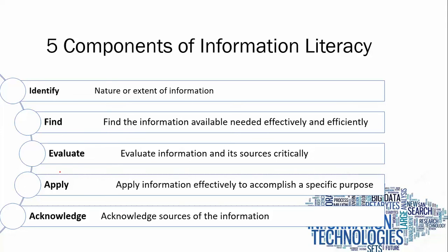After evaluating whether the source is legitimate — checking the author — you can now apply that information to what you're doing. For example, in Chapter 2 of your research paper, in the RRL section, you place it there. After that, you acknowledge the source of the information using APA format or MLA format — that's how you cite sources, whether websites or books. This also helps us avoid plagiarism. You need to paraphrase the content to avoid plagiarism.